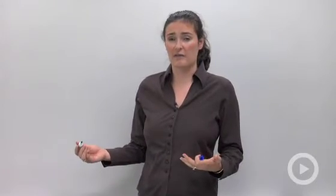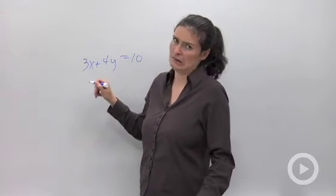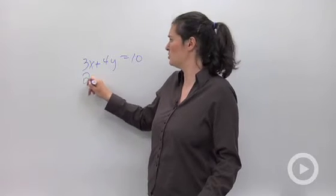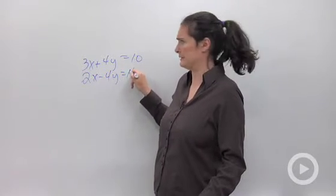I'm going to show you one problem. I'm just going to start it off for you to show you what I mean. I'm just making this up. 3x plus 4y equals 10. I just made that up. And 2x minus 4y equals 14.